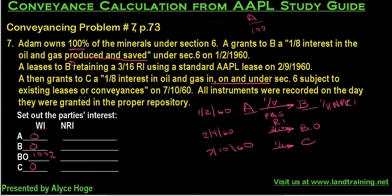Now let's look at the net revenue interest. This is like your first paycheck — you think you'll get a certain amount, but taxes are deducted. Net revenue interest is what the oil and gas company and royalty owners profit after all bills are paid. A is going to get the 3/16ths royalty and doesn't have to pay any bills. But remember, A gave 1/8 to B — if A ever gets an oil and gas lease, A gives B 1/8 of that interest.